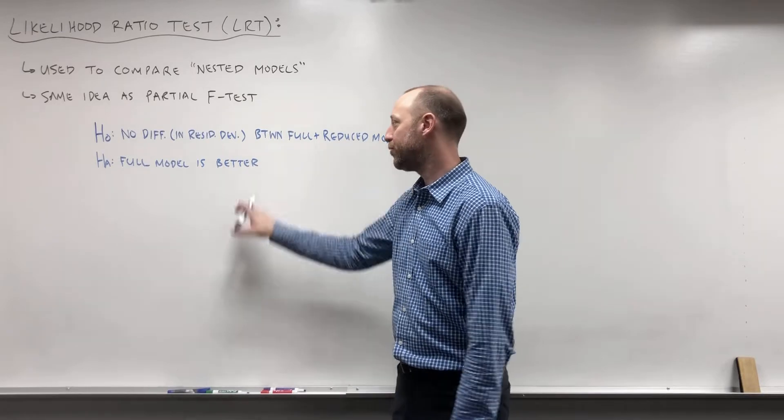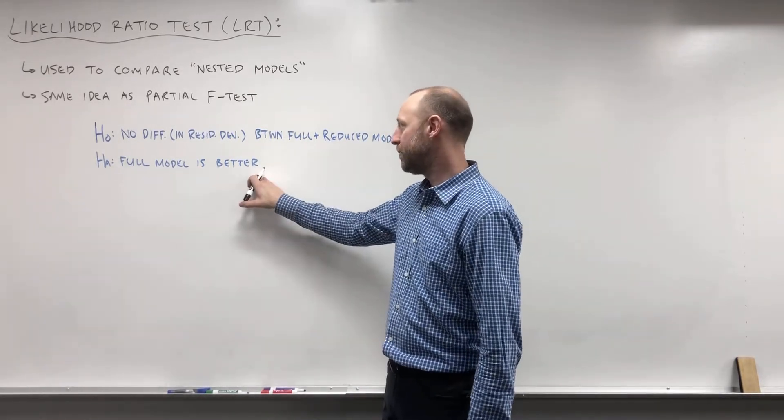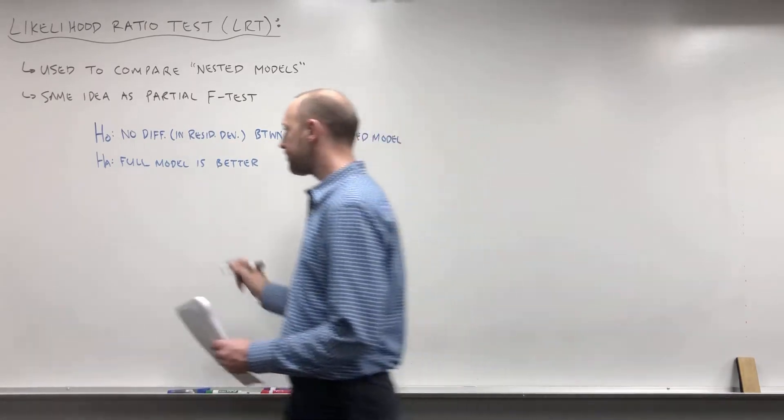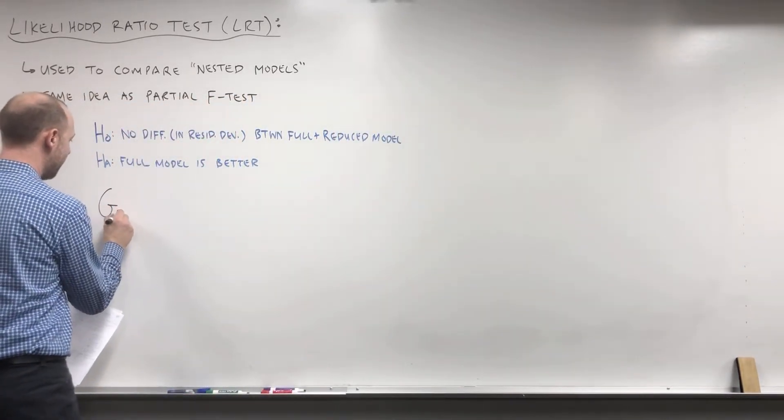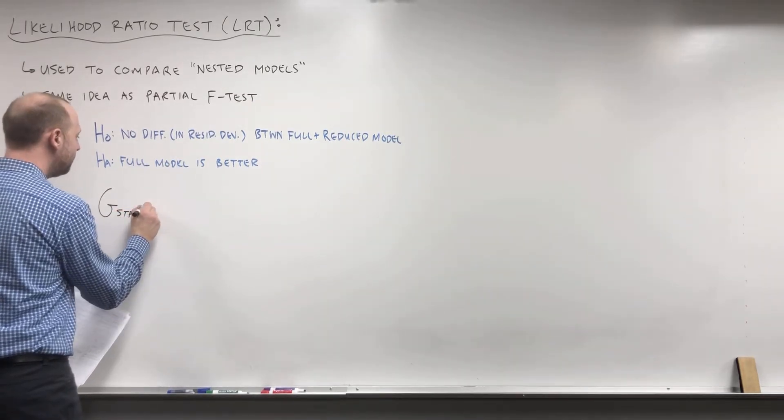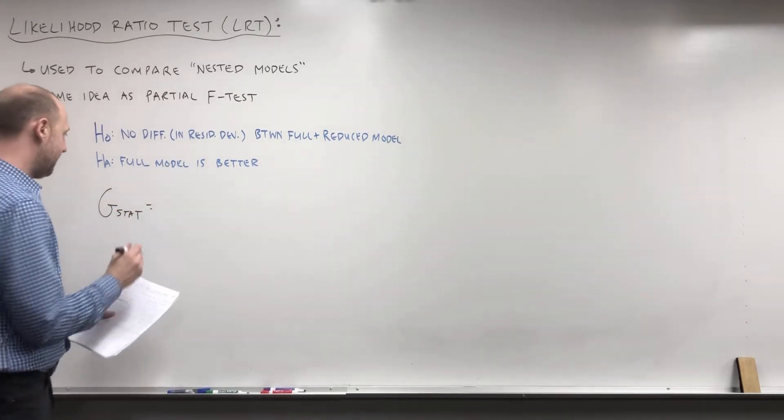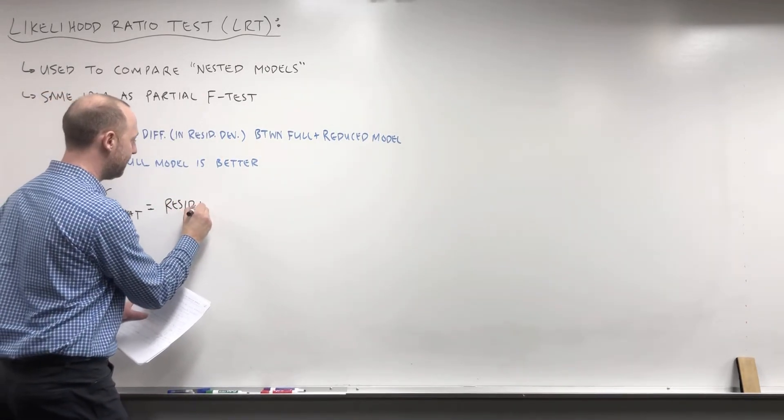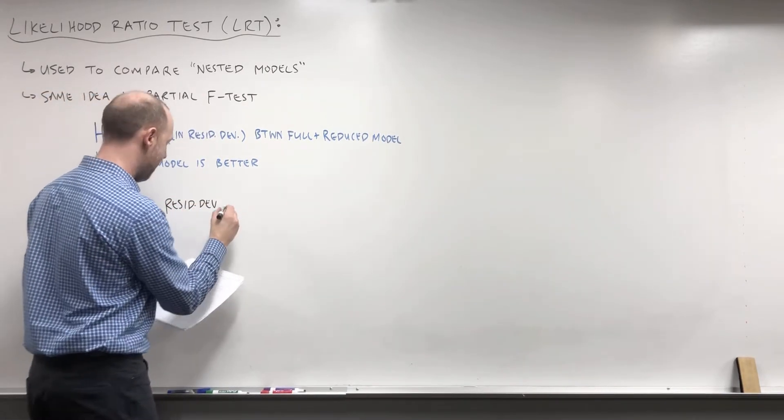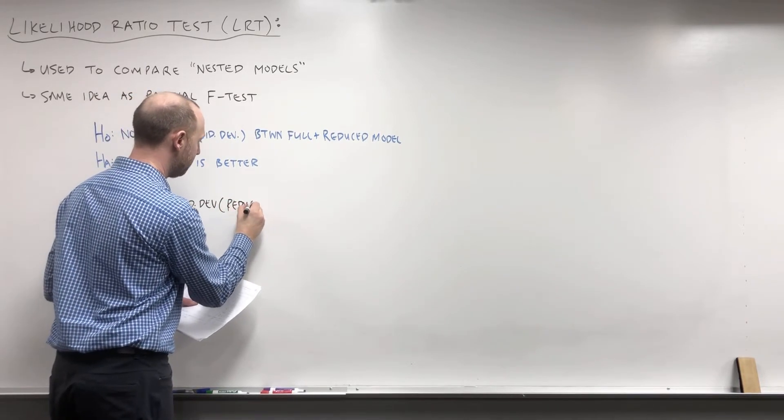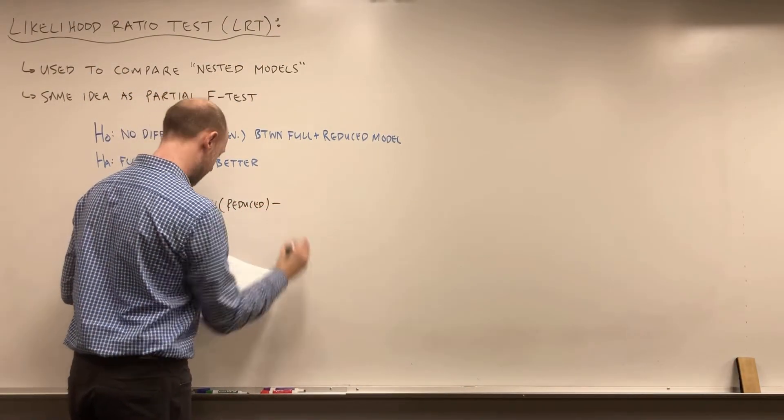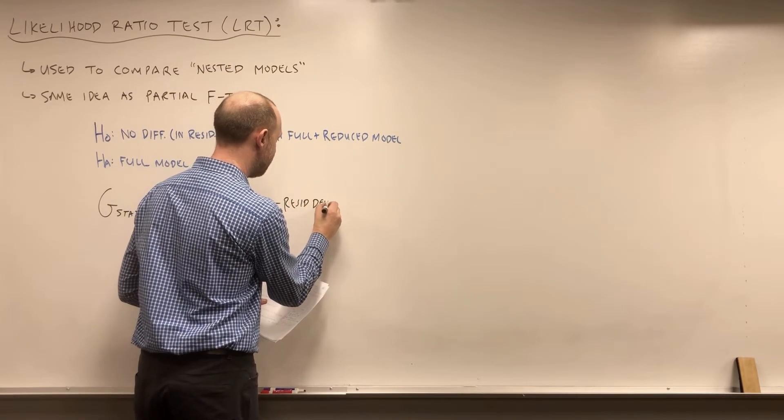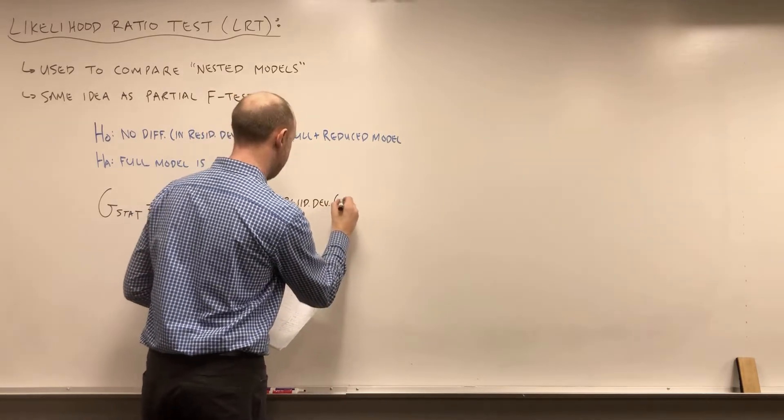The alternative hypothesis is that the full model is better. By better, I mean it has lower residual deviance or lower unexplained error. The test statistic—you're not going to calculate this by hand, but just to mention it—is the residual deviance of the reduced model minus the residual deviance in the full model.